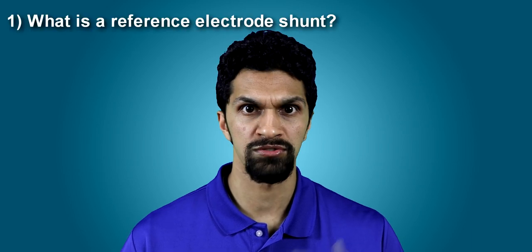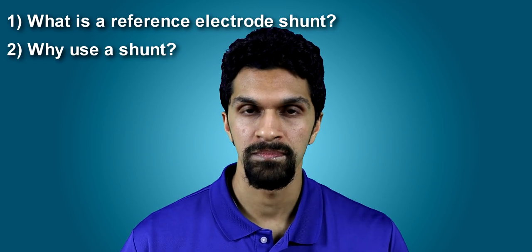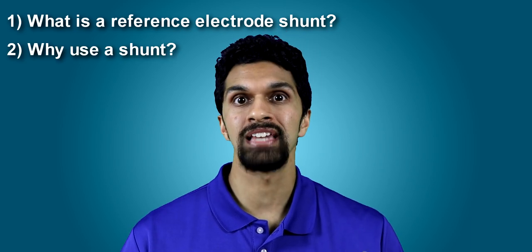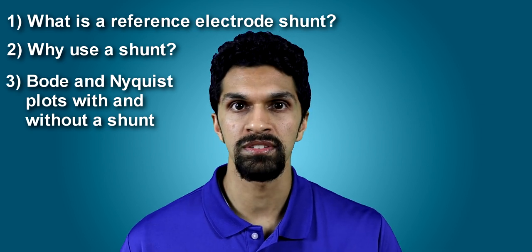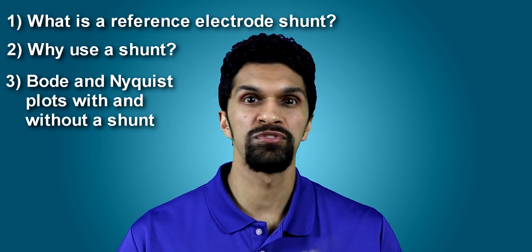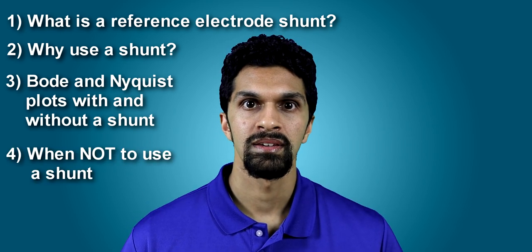This video is broken up into several sections. First, we will talk about what is a reference electrode shunt. We will then discuss why you would use a shunt. We will then provide examples of Bode and Nyquist plots, both with and without a shunt. And lastly, we'll talk about a few instances where you might not want to use a shunt. Timestamps are in the description below.